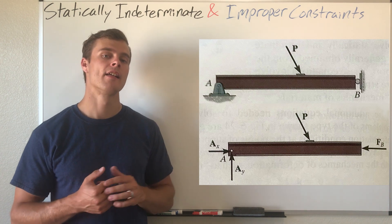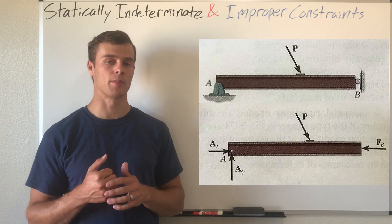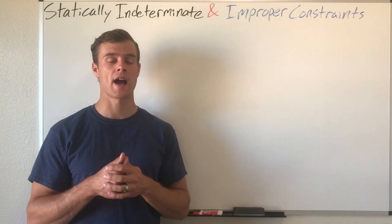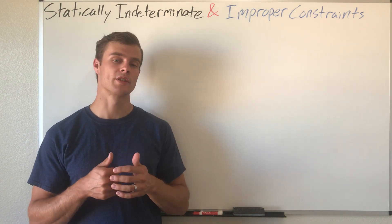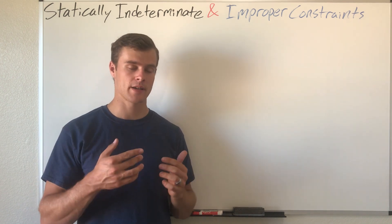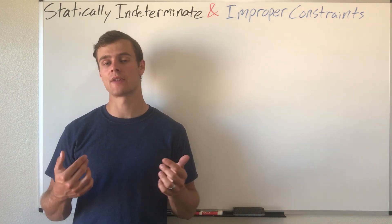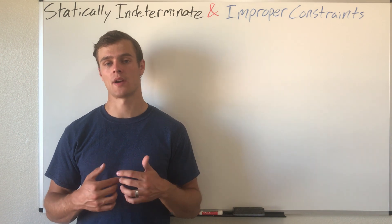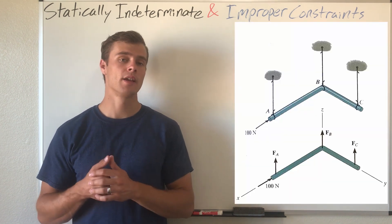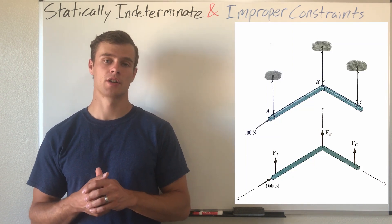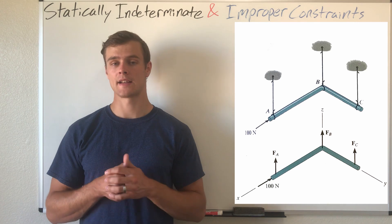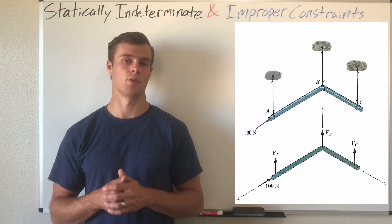In 3D space, if you have all your forces passing through the same axis — not necessarily going along the same axis, but just passing through that axis at any point — then it is also improperly constrained. Another way to get an object improperly constrained is if all your forces are parallel, either in 2D or 3D space.